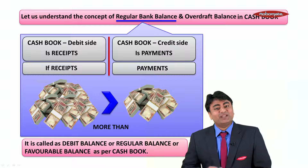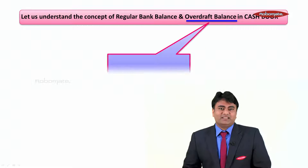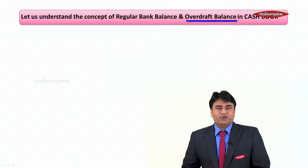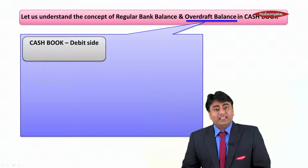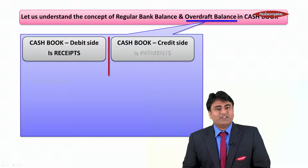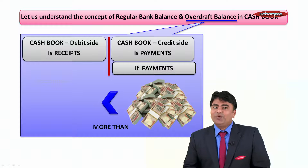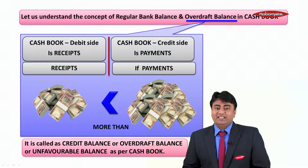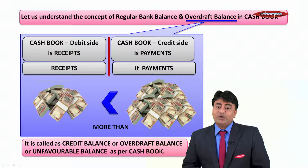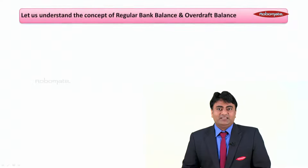The next part is overdraft balance. What is overdraft balance in the cash book? Again, the cash book debit side is receipts and the credit side is payments. If payments are more than receipts, it is called a credit balance, or overdraft balance, or unfavorable balance as per the cash book.